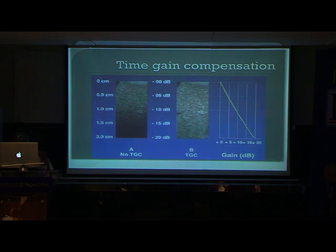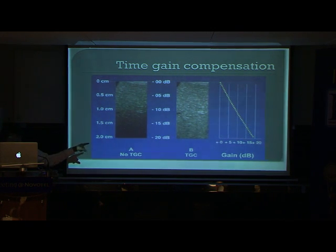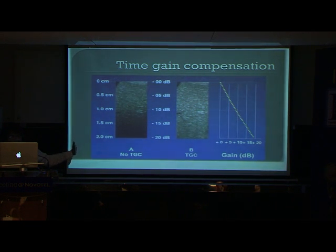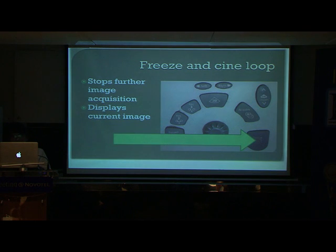Looking at a liver image: if echoes are poorly reflected from the lower part, increase the gain so the image from the lower part is equivalent to that seen in the upper part, giving a uniform image. That is the importance of time gain compensation. Finally, the freeze and cine loop function can be used for recording purposes.